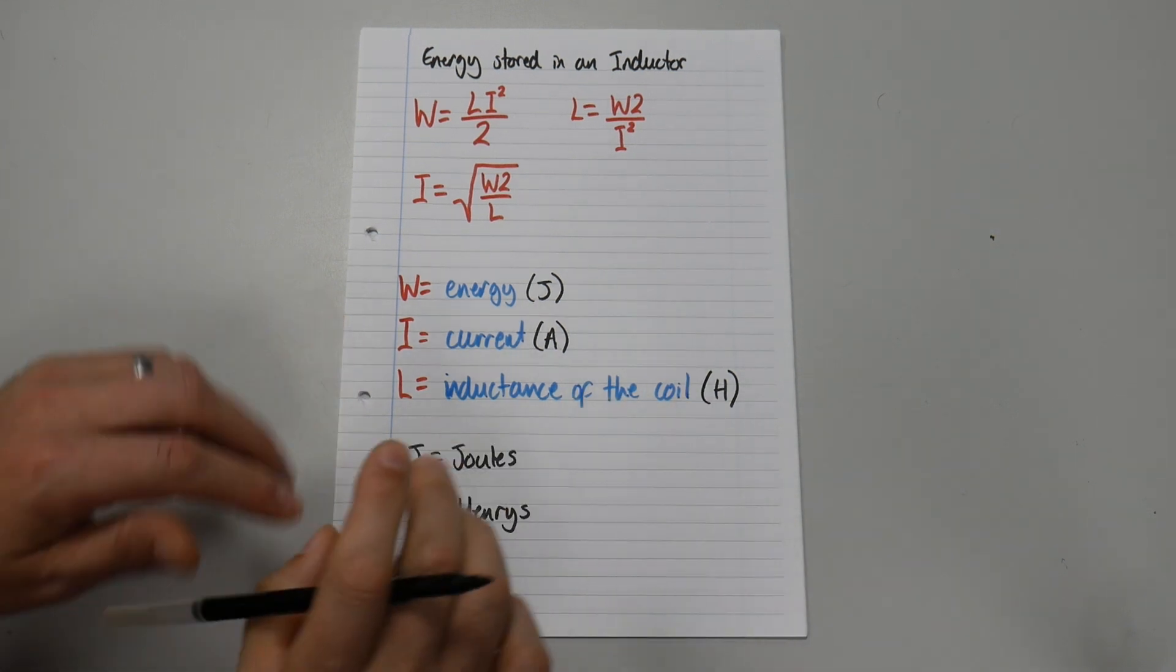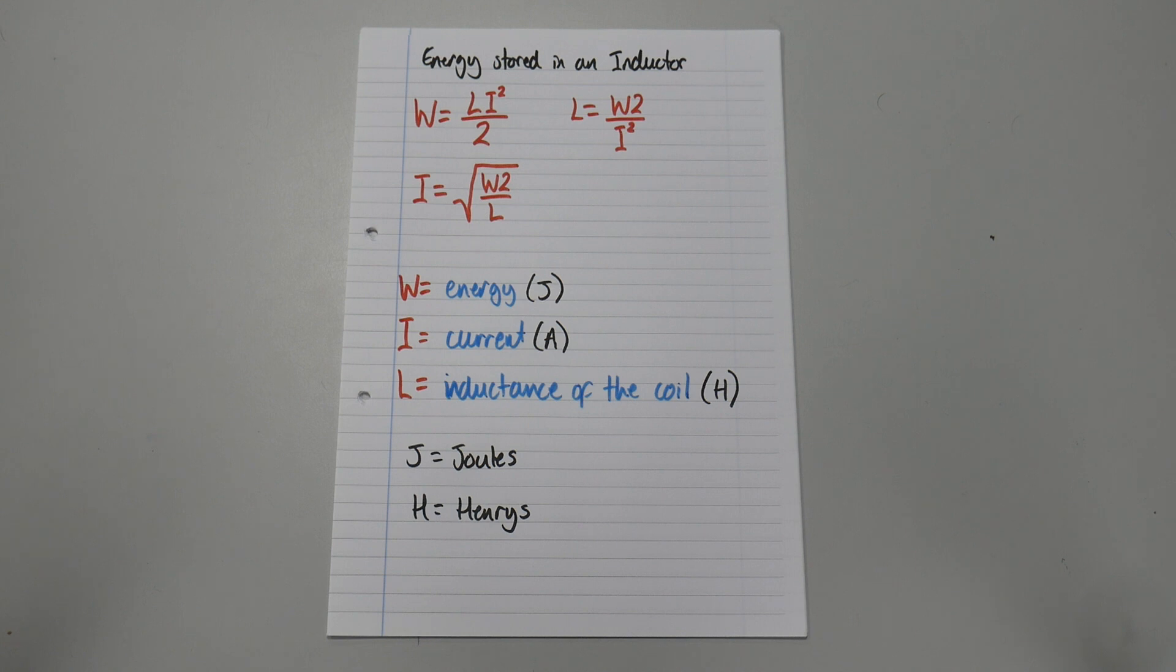Lay out your revision notes just like this. Using different colours will help you memorise the formulas. And each time we write a formula down, let's transpose it always and write down what each of our formula symbols means.